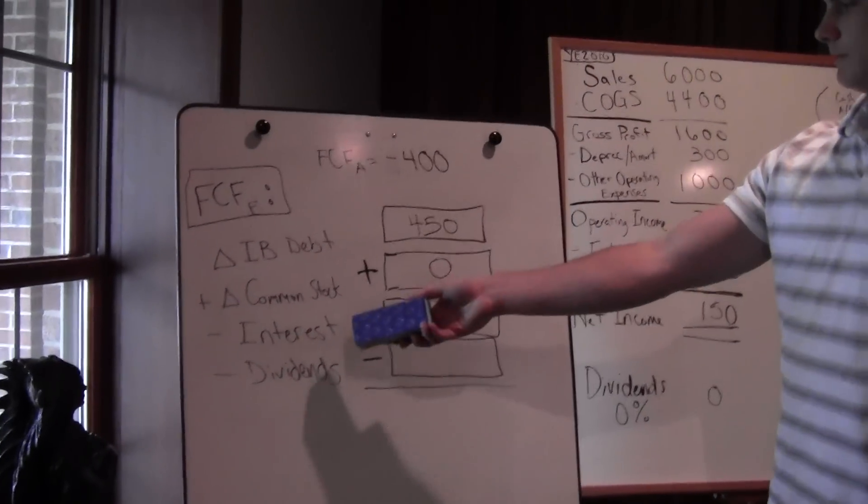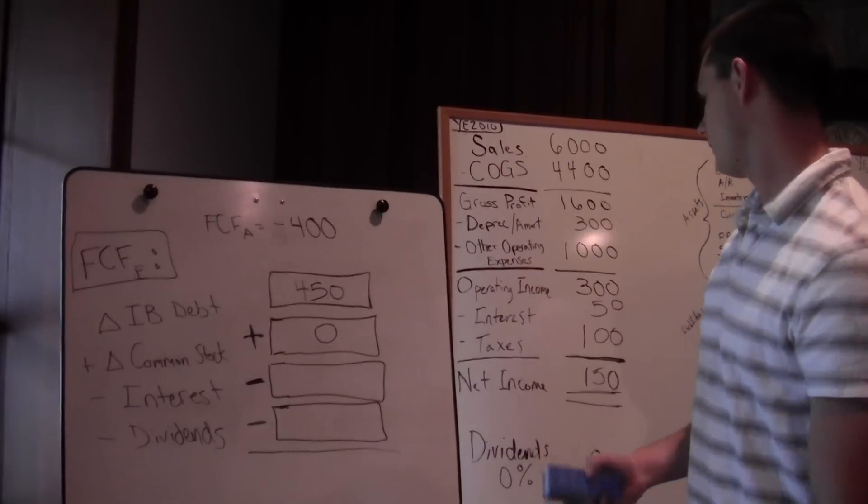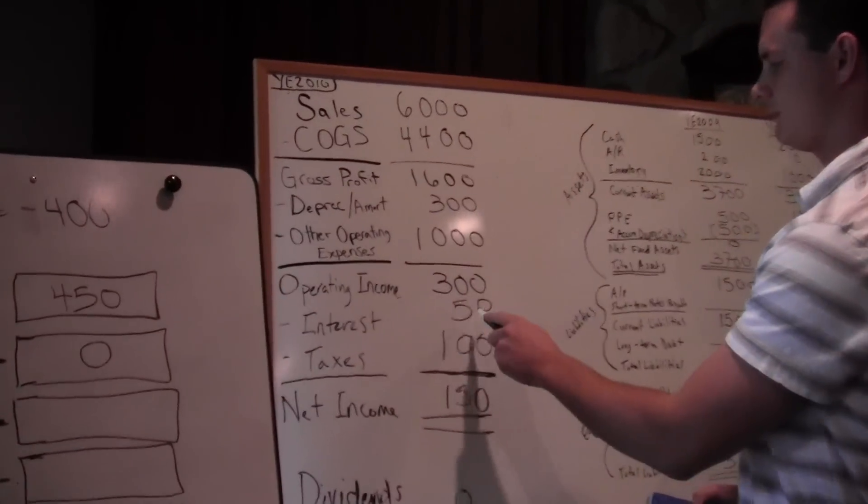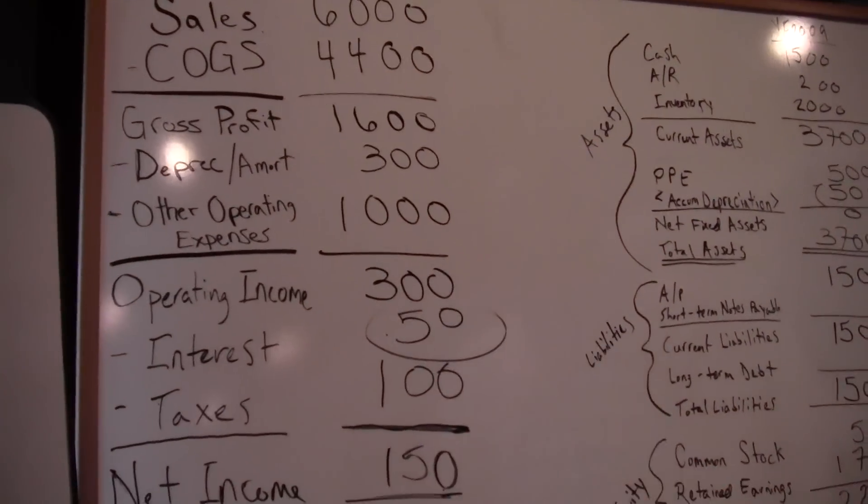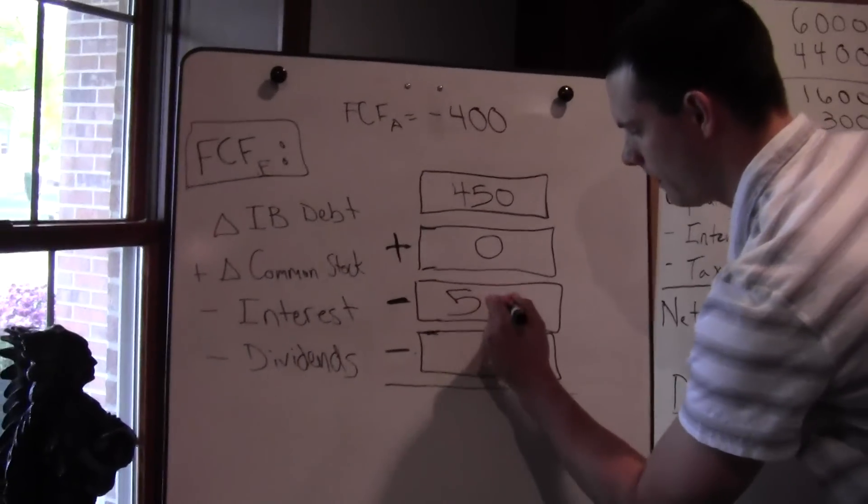Now we want to look at our interest, what we paid out. That's on our income statement as interest expense. You can see we have $50 here in interest expense, so we put that in: $50.